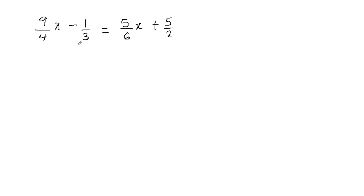We need to find the least common multiple of 4, 3, 6, and 2. So the least common multiple of 4, 3, 6, and 2 is 12. So that means we're going to multiply this equation by 12.